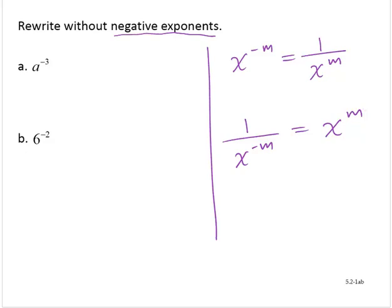So for example, a to the negative third. To rewrite this without negative exponents, I simply write 1 over a to the third. And that's it.